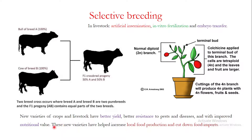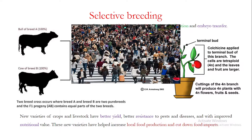By the process of selective breeding you can make new varieties of crops and livestock. These new varieties have better yield, better resistance to pests and diseases, and improved nutritional value. They have helped increase local food production and cut down food imports. The basic theme is that because of the increased population, to meet the food and nutritional requirements of an increased population around the globe, you have to pursue selective breeding.